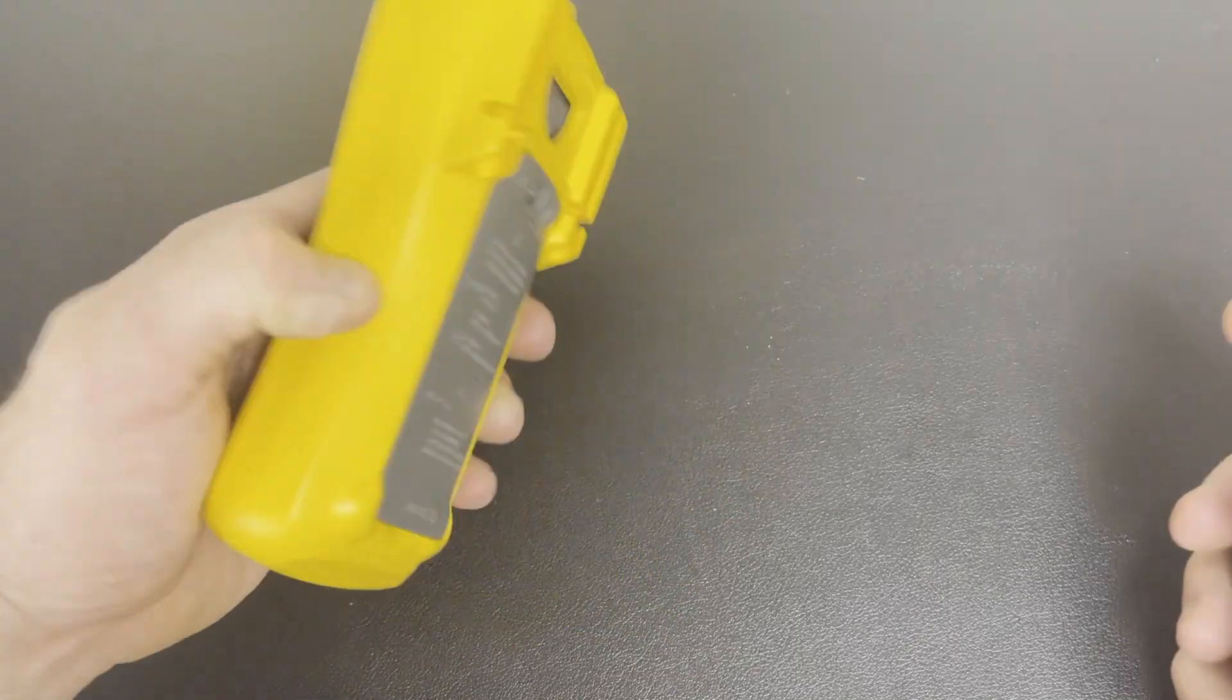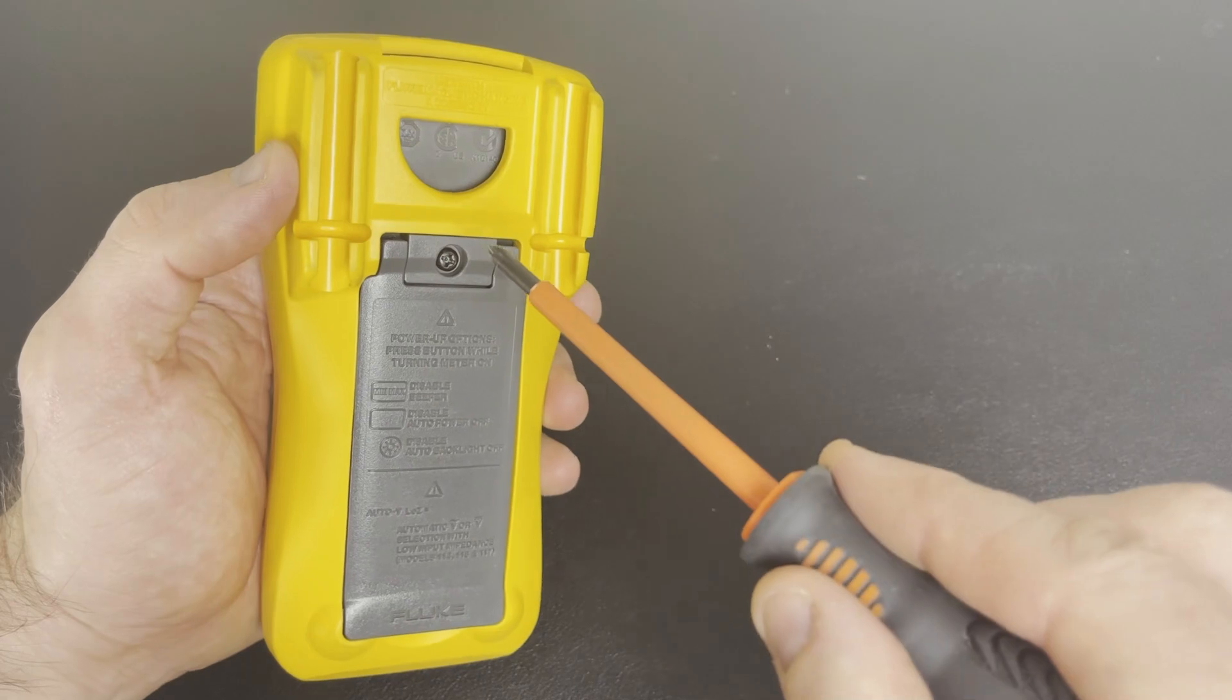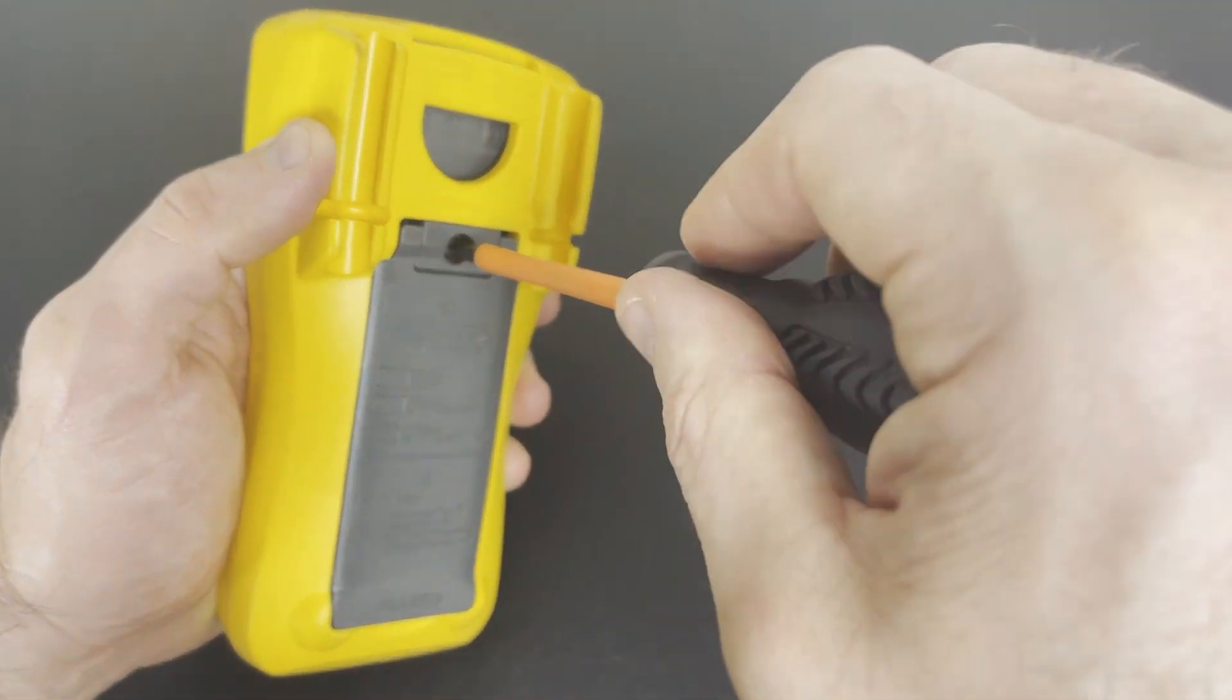First thing you need to do, turn over the multimeter. Now with the Phillips head screwdriver, you're going to take this screw out right here.